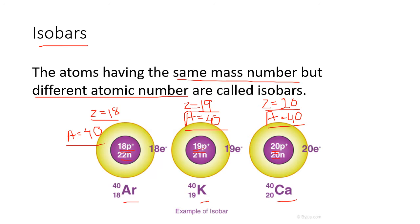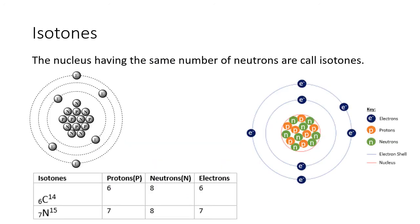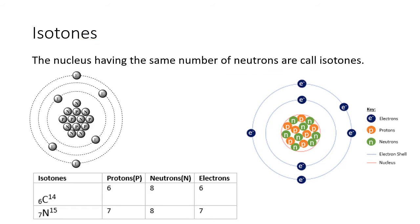The next type is isotones. Nuclei having the same number of neutrons are called isotones. Let's take the example of carbon-14.